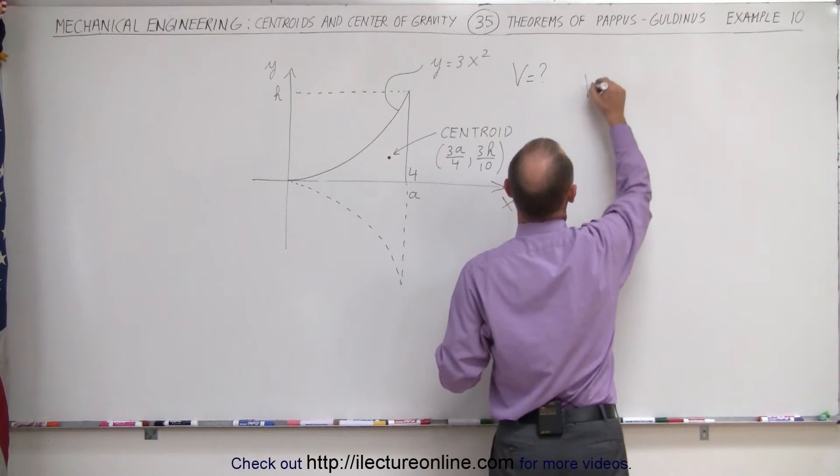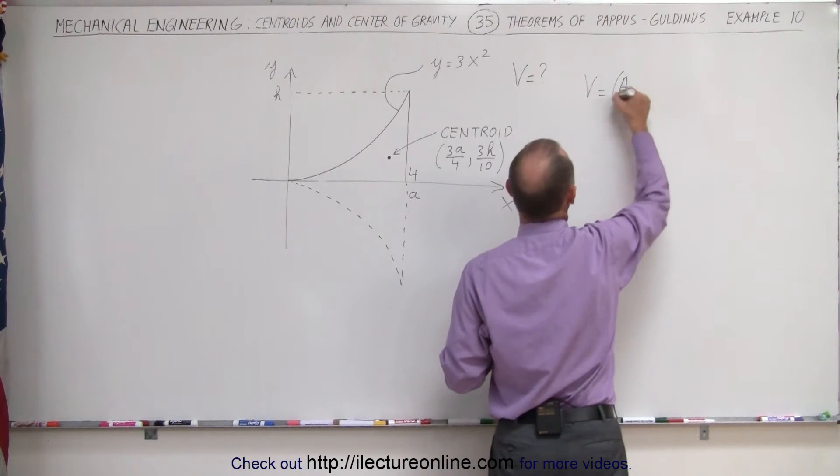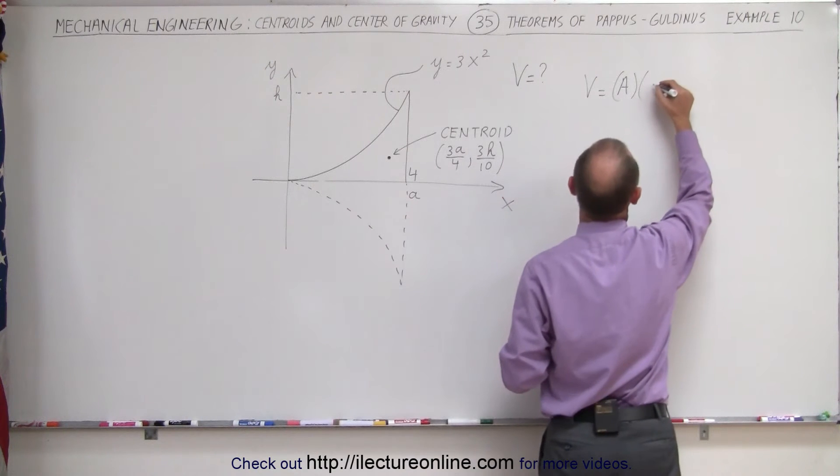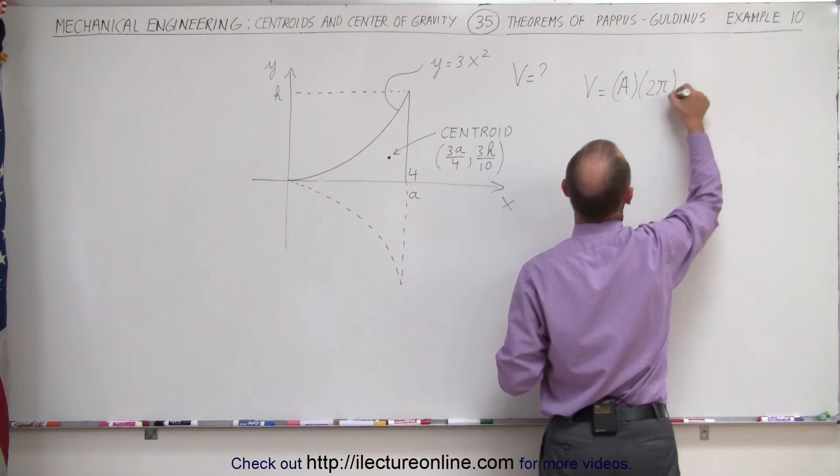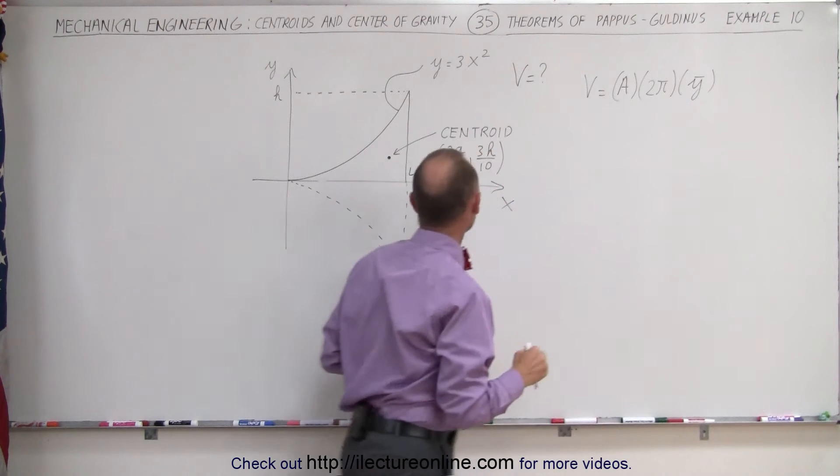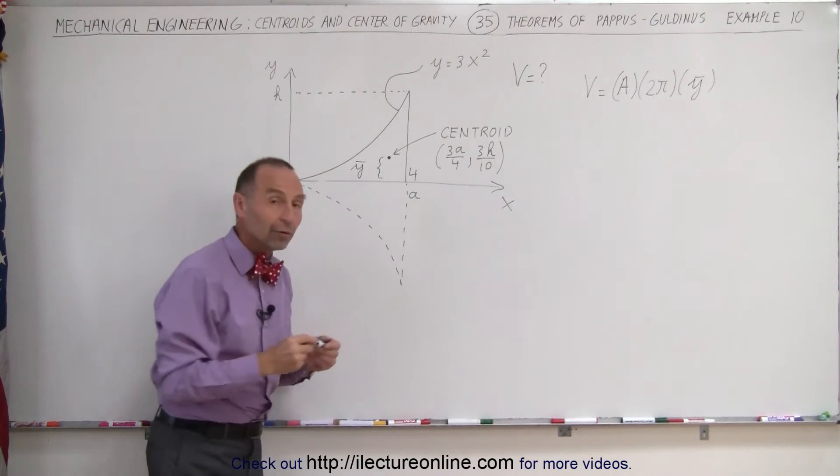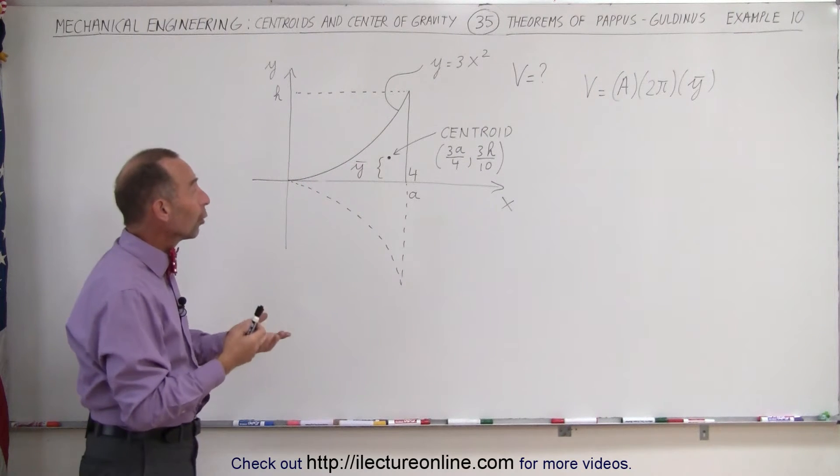Remember the equation here, volume is equal to the area times the distance covered by the centroid which is going to be a circular path. That's equal to 2π times the y-coordinate of the centroid relative to the x-axis. That's this distance right here, that's ȳ which just simply means the y-coordinate of the centroid.